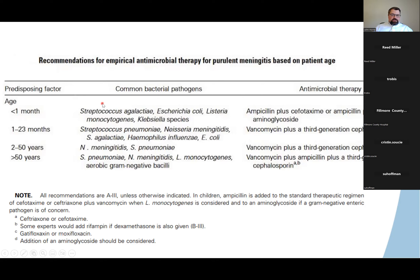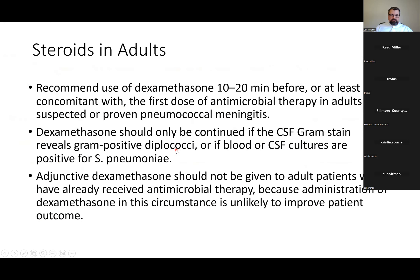The most common bacterial causes differ with age. Under one month: Strep agalactiae is number one, then E. coli. It then changes to Strep pneumoniae. From two to 50 years, it's Strep pneumoniae and Neisseria meningitidis as the top two — though it differs by study. The important thing is that whatever you give, make sure you cover Strep pneumoniae and Neisseria meningitidis really well.